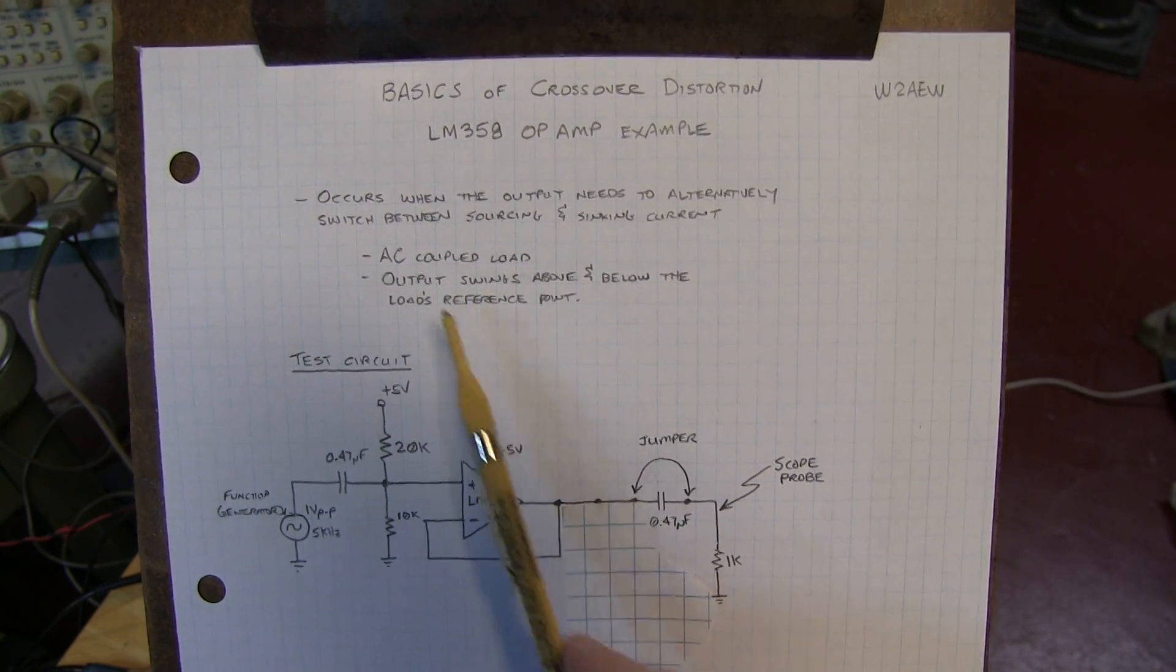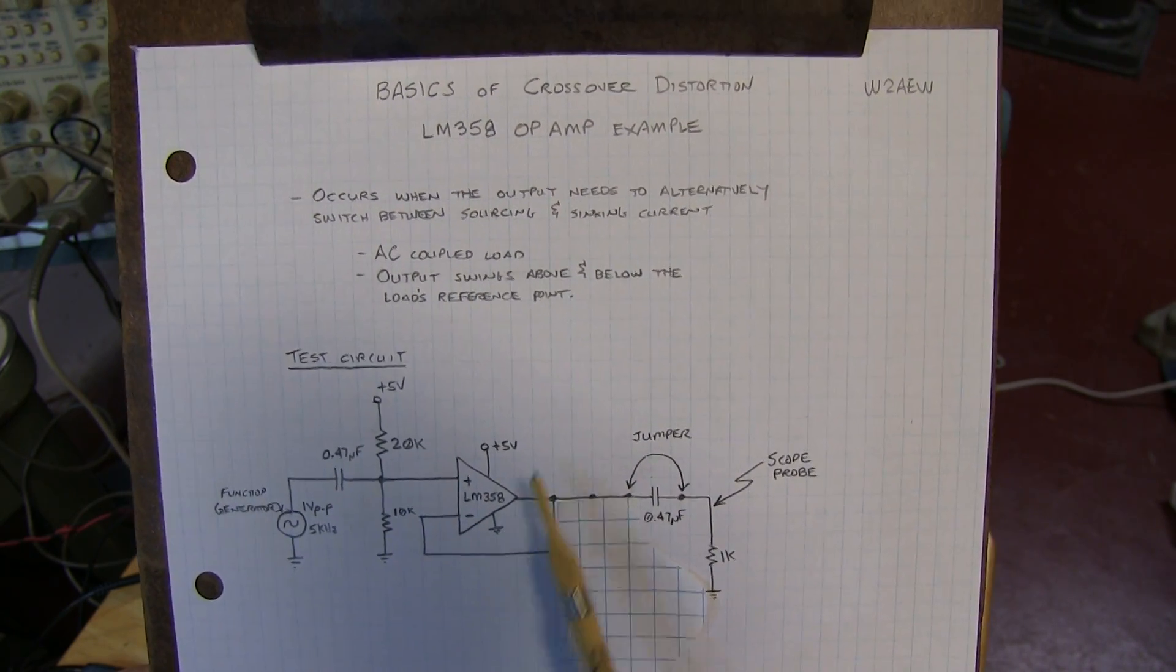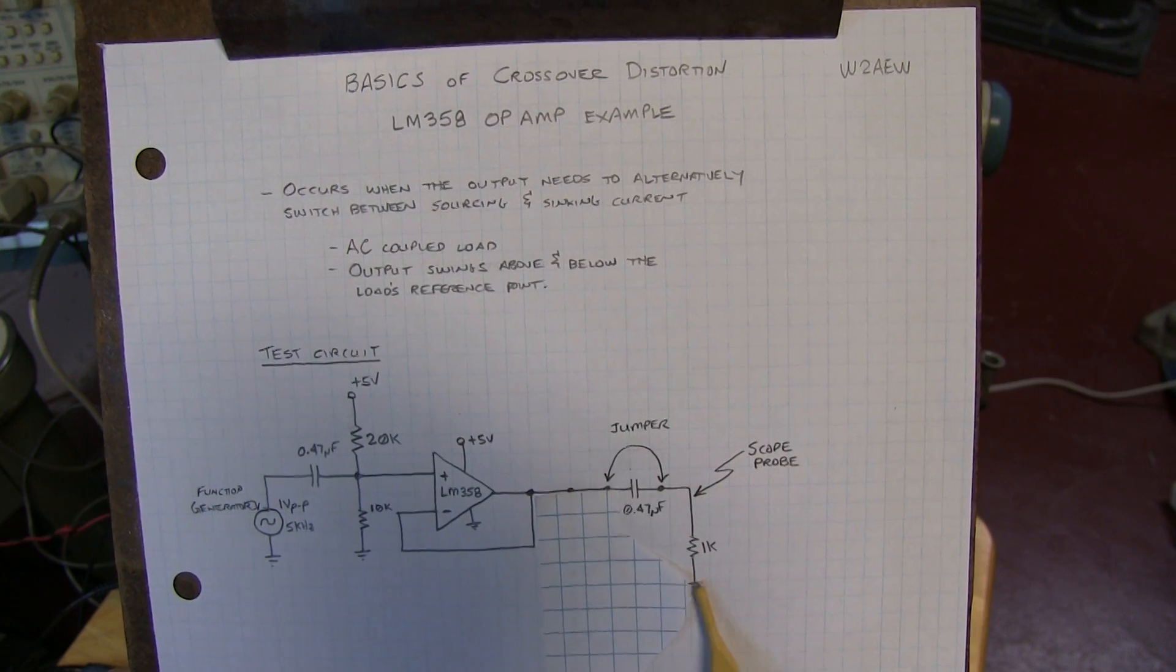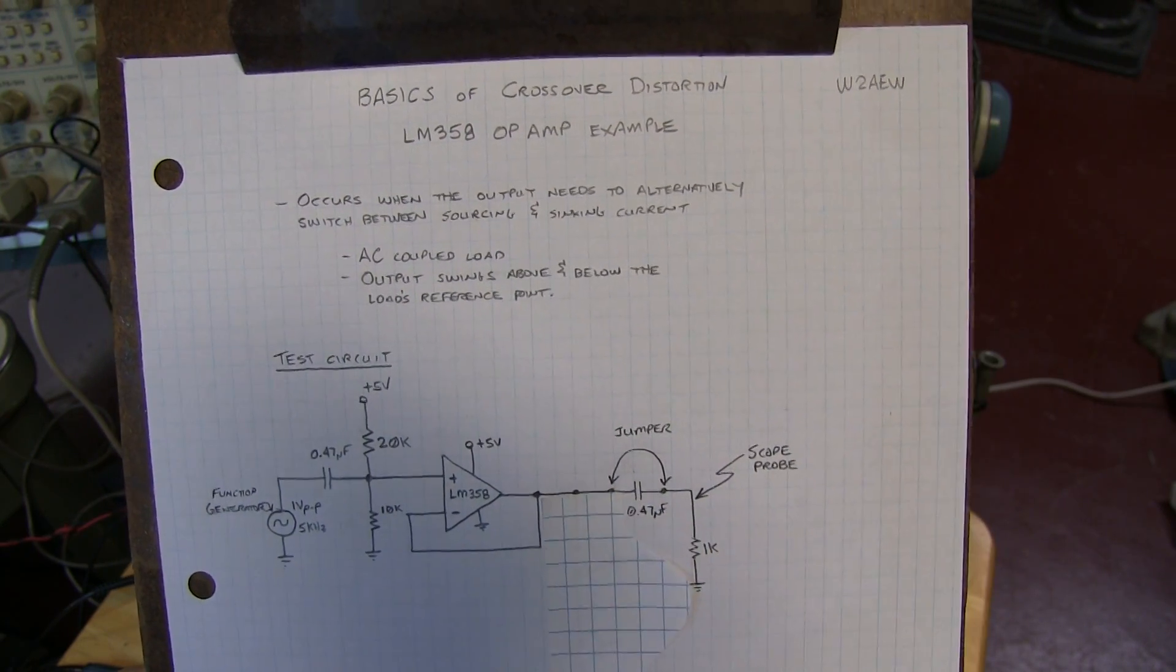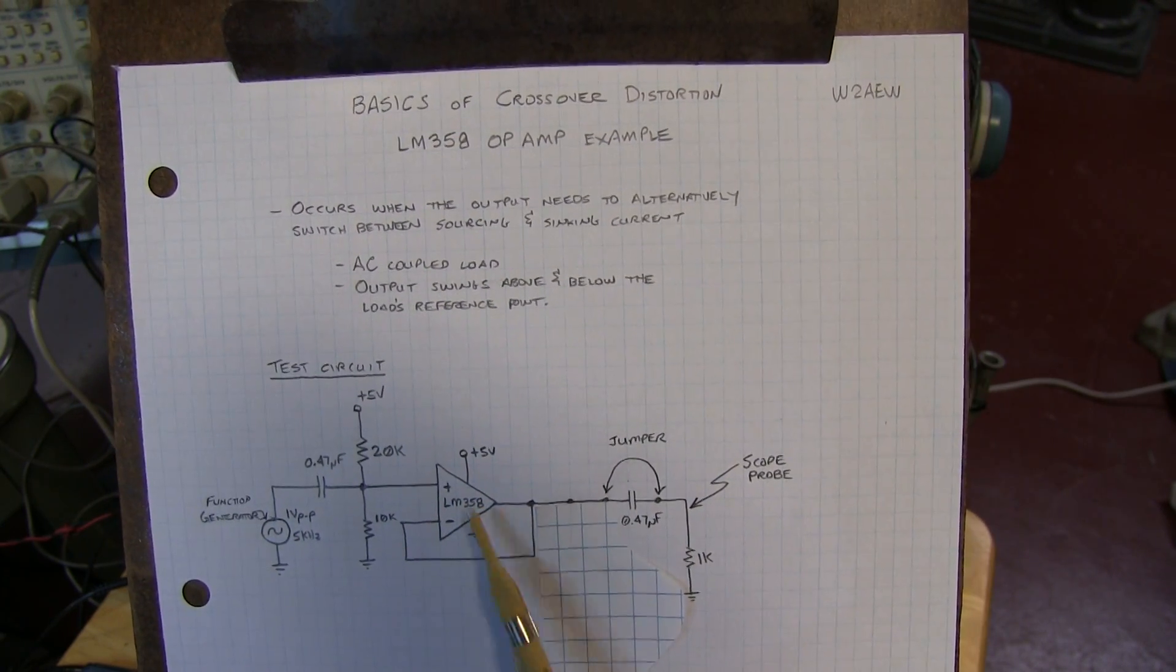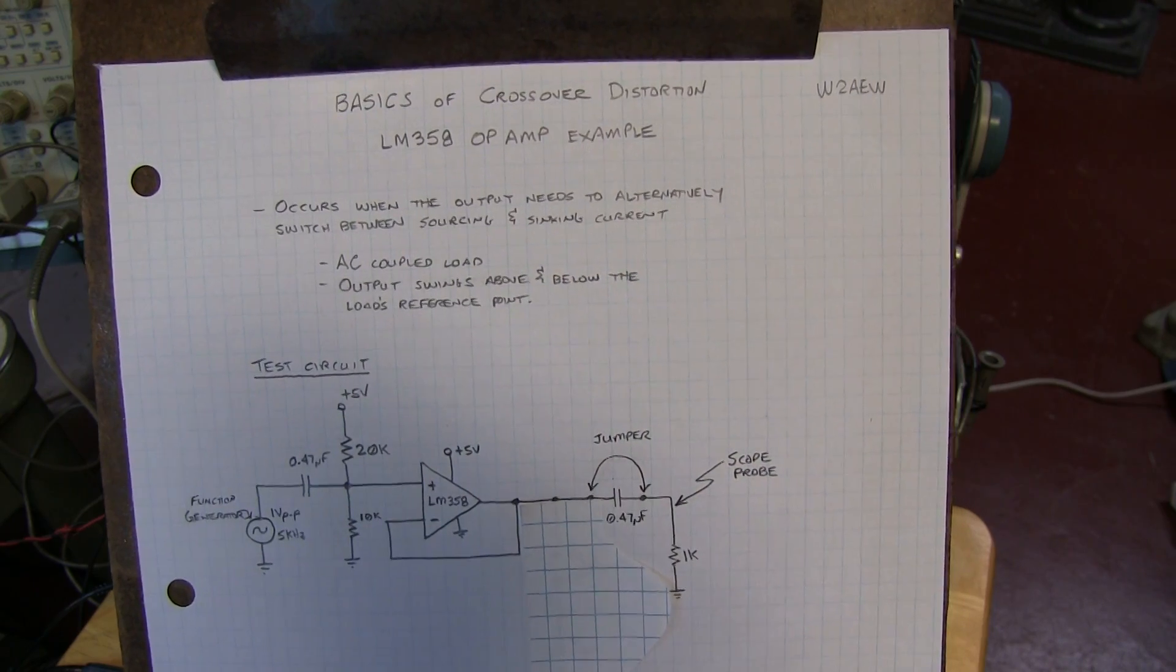Similarly, if the output swing excursions go above or below the reference point for a load, even if it is DC coupled, that can also cause a switch between sourcing and sinking current.